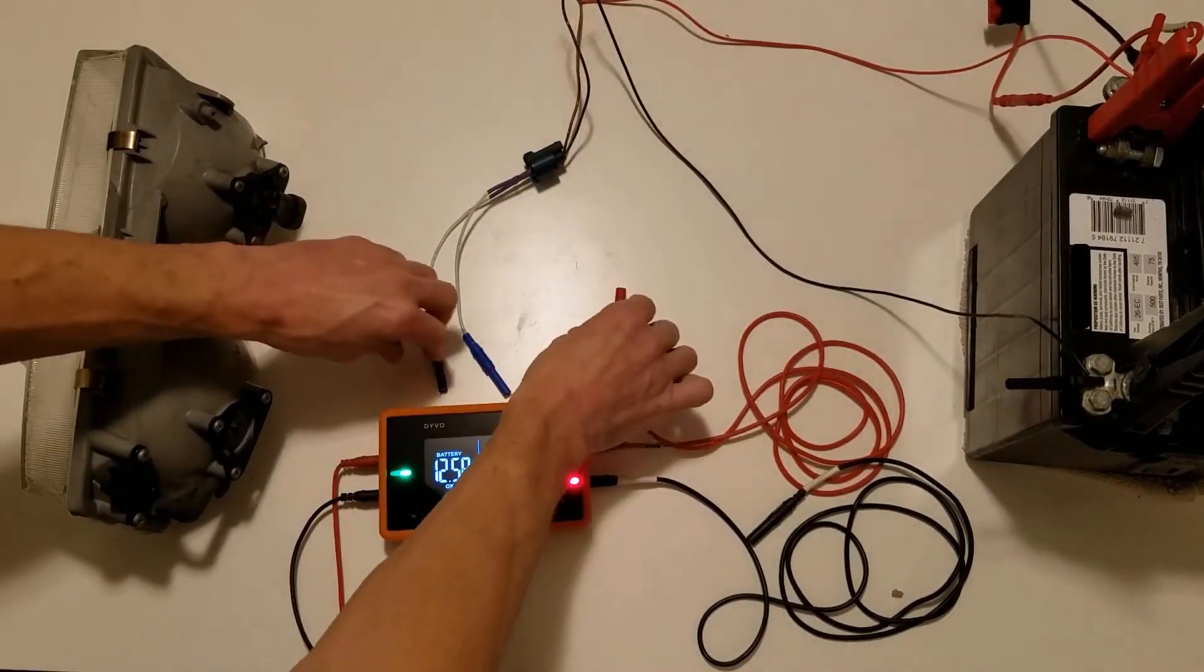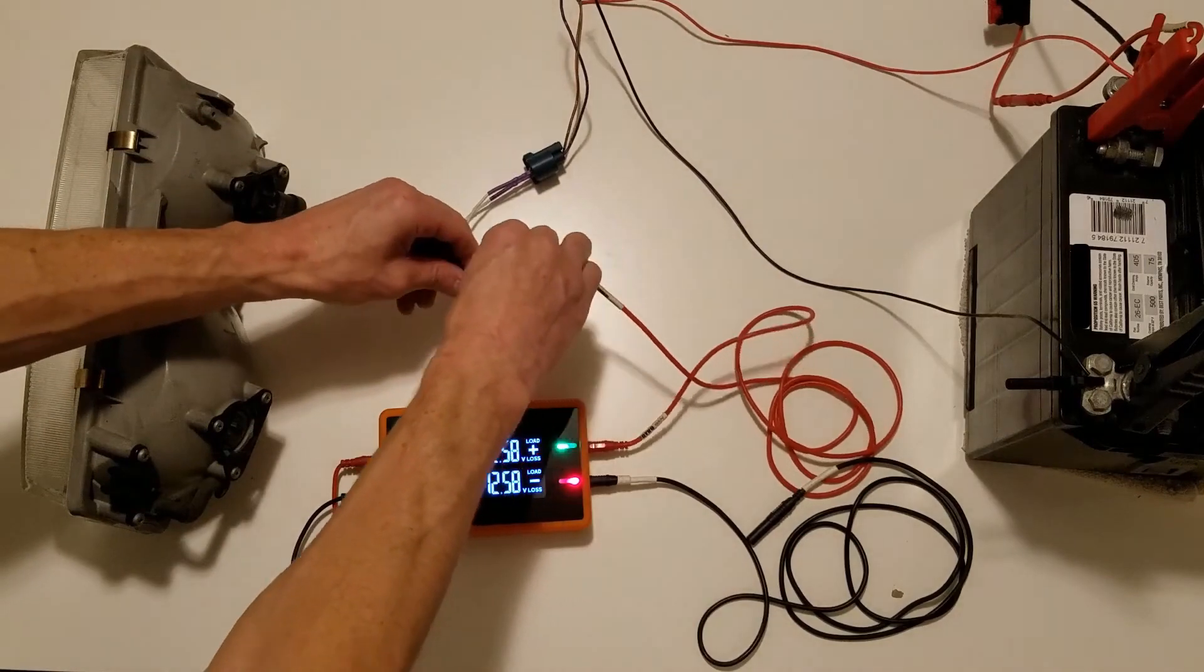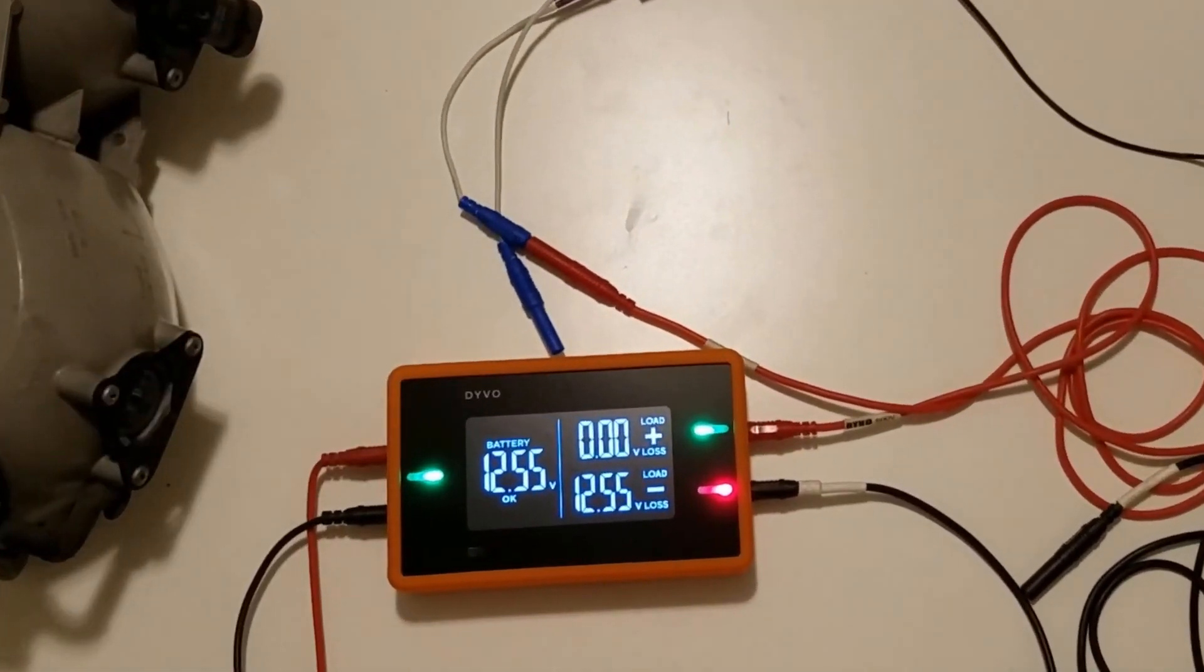I'm going to start with the positive side, and immediately you can see that my positive LED goes green. That tells me that I have a low voltage drop on the positive side, and we can see that we have a zero volt loss. A quick press of the mode button shows that we have 12.54 volts available on the positive side of the circuit.